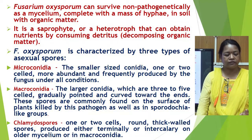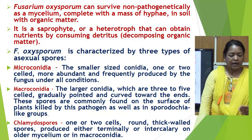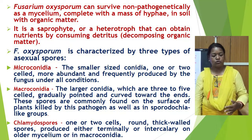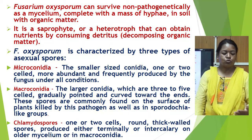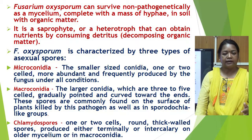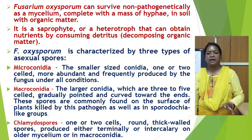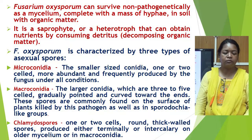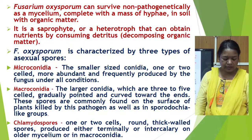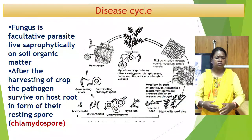Sporodochia is the fruiting body of Fusarium. The other spore is chlamydospore, which is the resting spore — one or two celled, round, thick walled, produced either terminally or intercalarily on older mycelium or in the macroconidia.